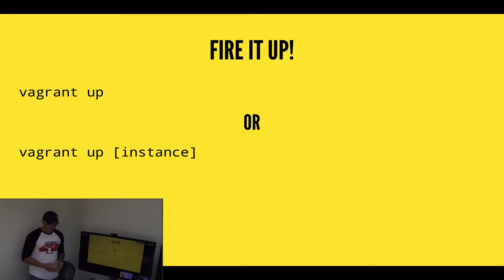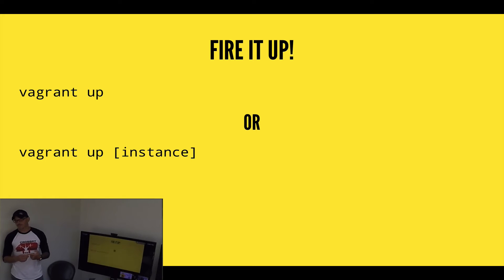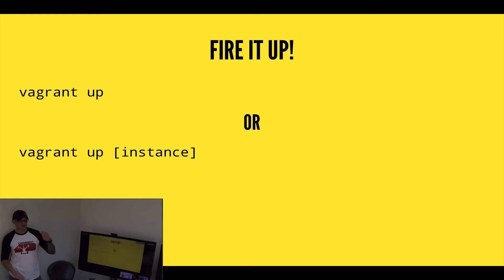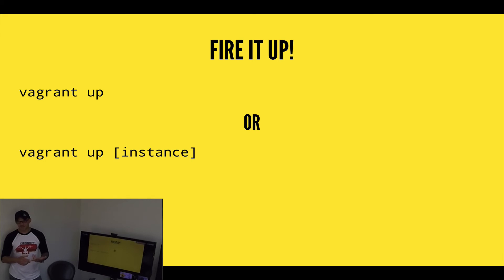With both configured, we can fire it up using 'vagrant up'. In a multi-machine setup — where we have multiple Vagrant machines defined in our Vagrant file — 'vagrant up' brings all of them up. Or you can specify the instance name, for example 'vagrant up agent1' or 'vagrant up puppet', and it will only bring up that specific instance.